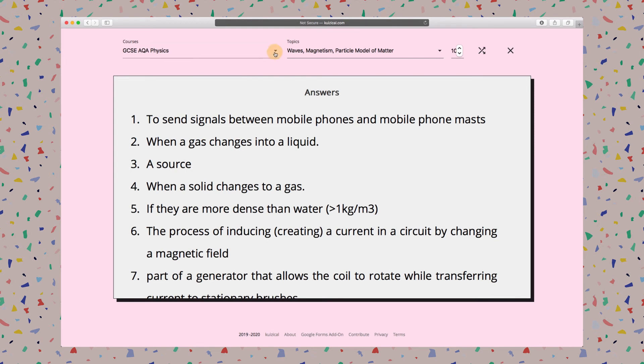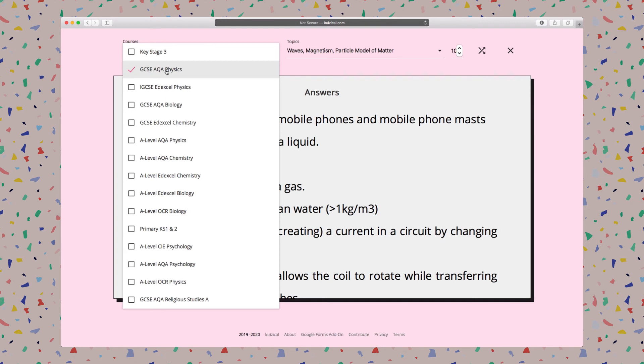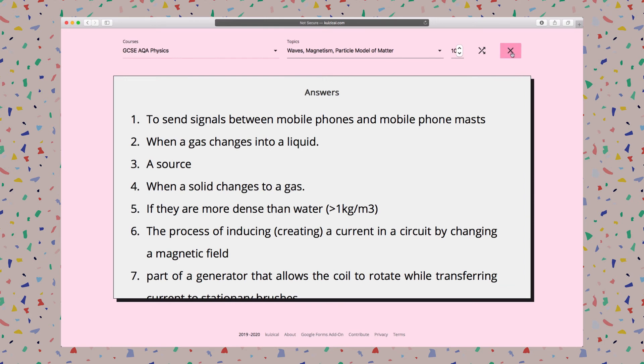I can also mix between courses, so I can have Physics, Biology, and Chemistry at the same time if I want to. If I want to reset immediately, just click this cross button and it resets everything blank back to default.